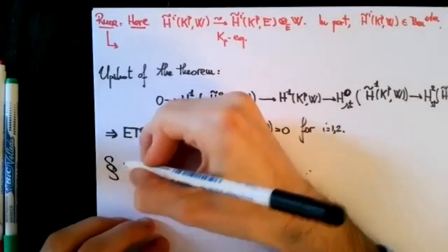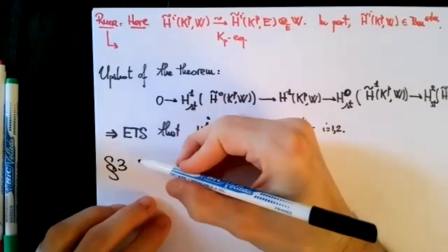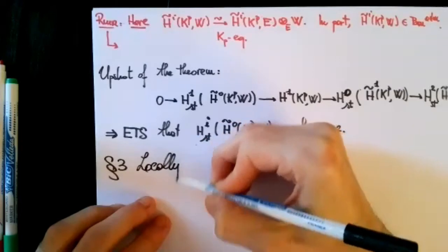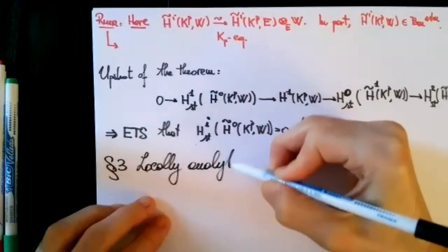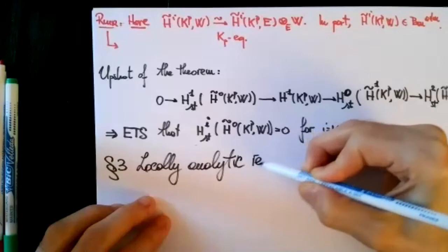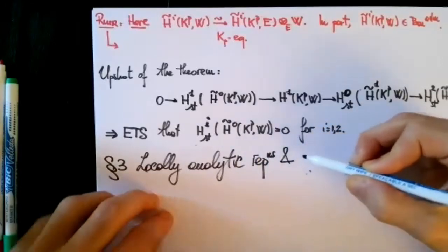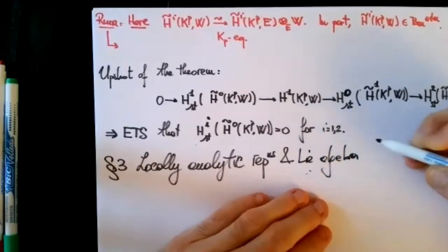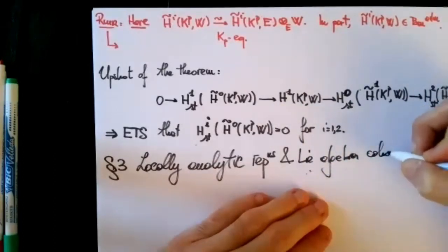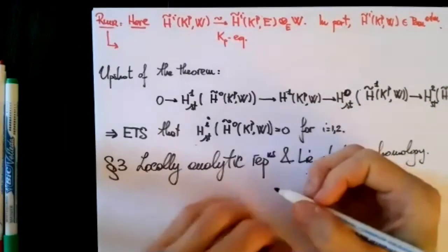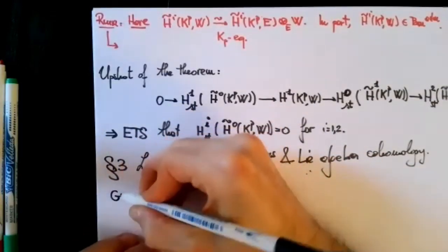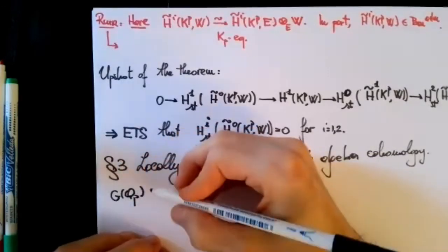To prove this vanishing, there are two key ingredients. The first is to use some Lie algebra homology. The second is to use the fact that H^0 can be identified with the space of connected components of our Riemann surface, which has an action by an abelian group. This leads us to Section 3: locally analytic representations and Lie algebra homology.